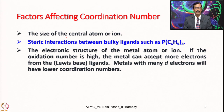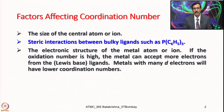The electronic structure of the metal atom or ion is also equally important. If the oxidation number is high, the metal can accept more electrons from the ligands — the Lewis base — because it has more empty orbitals. Metals with many d-electrons will have a lower coordination number. That is why later transition metals after d6 electronic configuration show a more pronounced tendency toward lower coordination numbers compared to early metals, which tend to have a larger number of surrounding ligands.